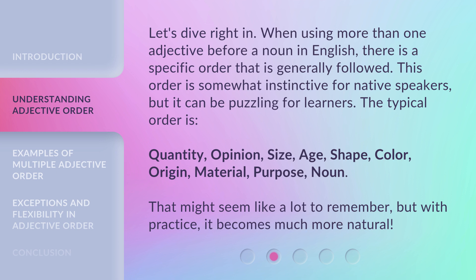The typical order is: quantity, opinion, size, age, shape, color, origin, material, purpose, noun. That might seem like a lot to remember, but with practice, it becomes much more natural.